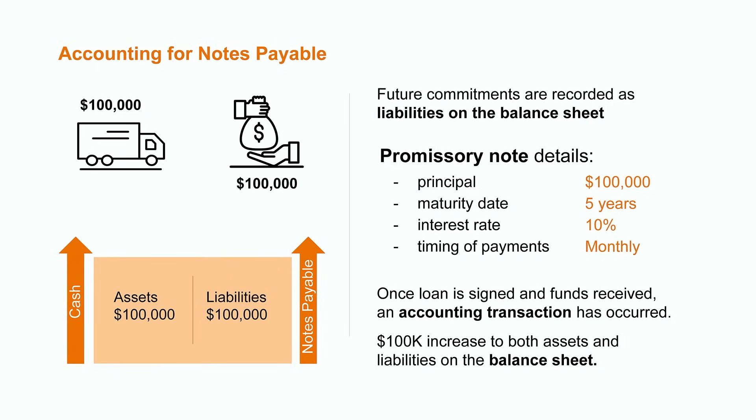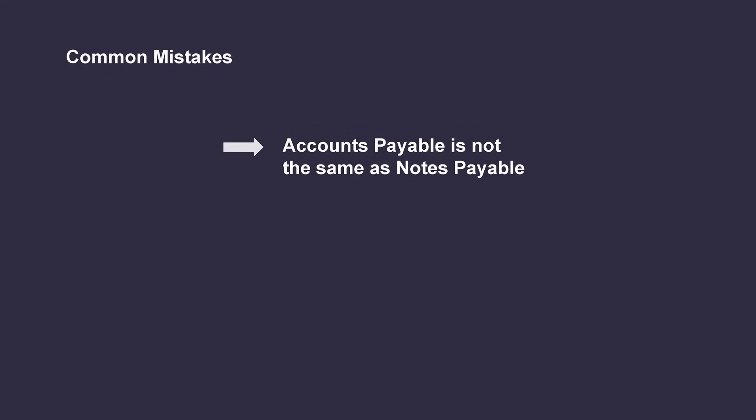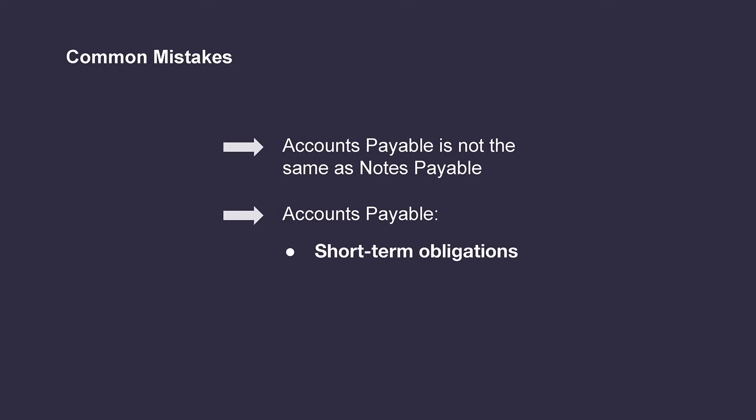Now that we have a good understanding of the concept, let's run through a common misconception. There's a difference between notes payable and accounts payable. Many people confuse the two since they're both common types of liabilities. The major difference is that accounts payable are short-term obligations usually made to suppliers in the course of normal business operations. Say for example, I run a construction business and you are my wood supplier.